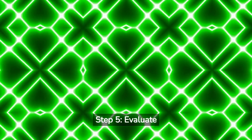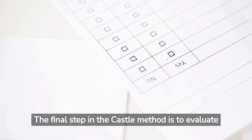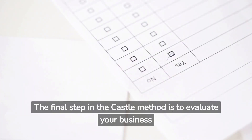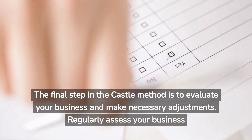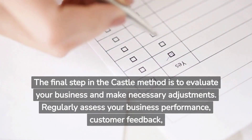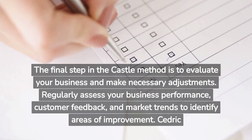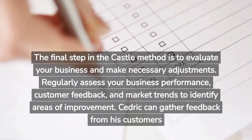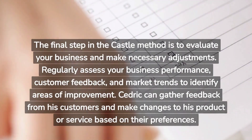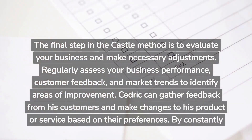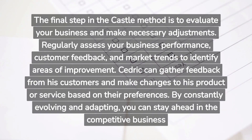Step 5: Evaluate and Evolve. The final step in the CASEL method is to evaluate your business and make necessary adjustments. Regularly assess your business performance, customer feedback, and market trends to identify areas of improvement. Cedric can gather feedback from his customers and make changes to his product or service based on their preferences. By constantly evolving and adapting, you can stay ahead in the competitive business landscape.